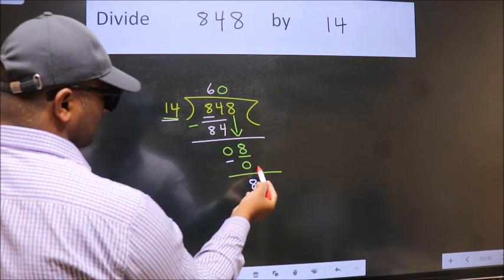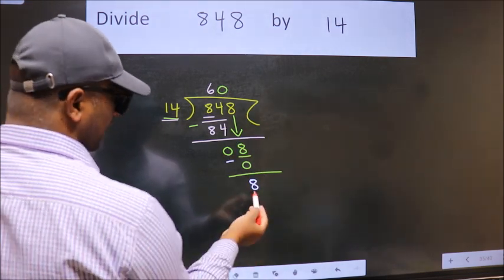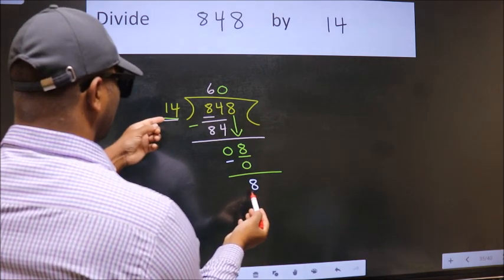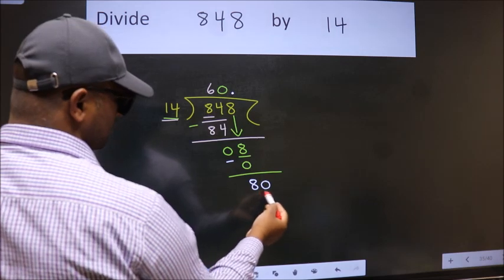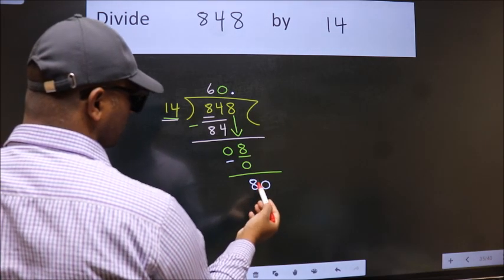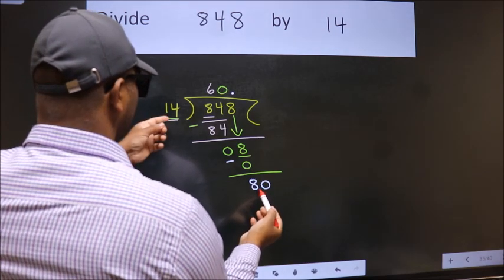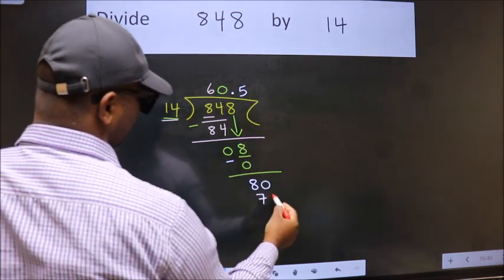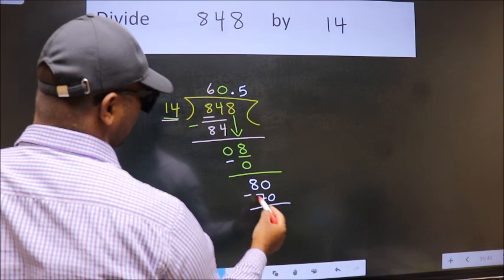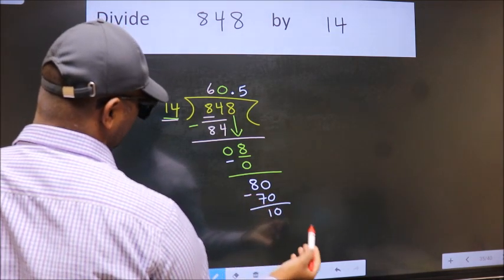Over here we did not bring any number down, and 8 is smaller than 14, so now we can put dot and take 0. So 80. A number close to 80 in 14 table is 14 times 5, which is 70. Now we subtract, we get 10, and you continue the division.